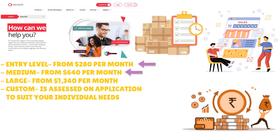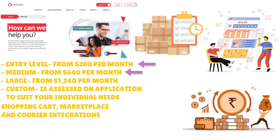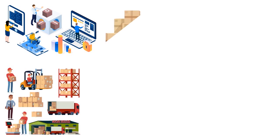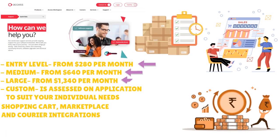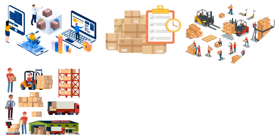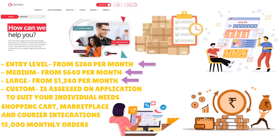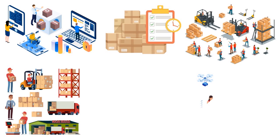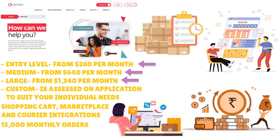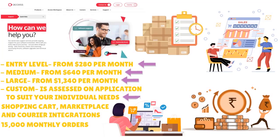For the medium tier at $550 to $750, you get entry-level features plus inventory management and warehouse management, supporting up to 5,000 orders per month. For large, expect to pay $1,500 to $2,000 — this includes everything in medium and supports up to 15,000 monthly orders with sophisticated warehouse management, ideal for 3PLs and businesses running multiple warehouse locations. For custom pricing, contact Access Mintsoft directly — it ranges from around $2,000 up to $20,000.